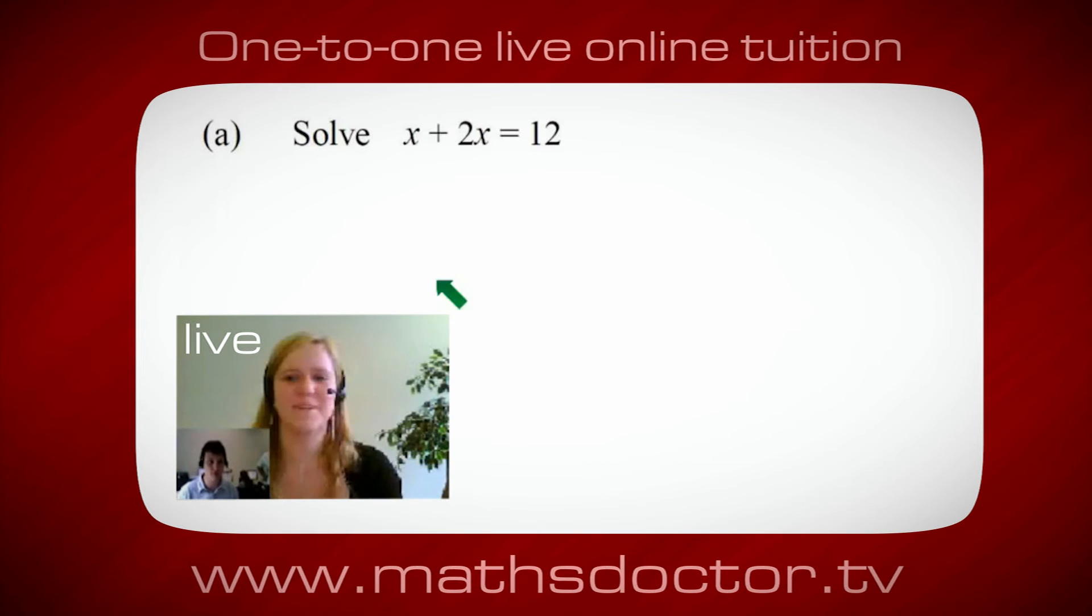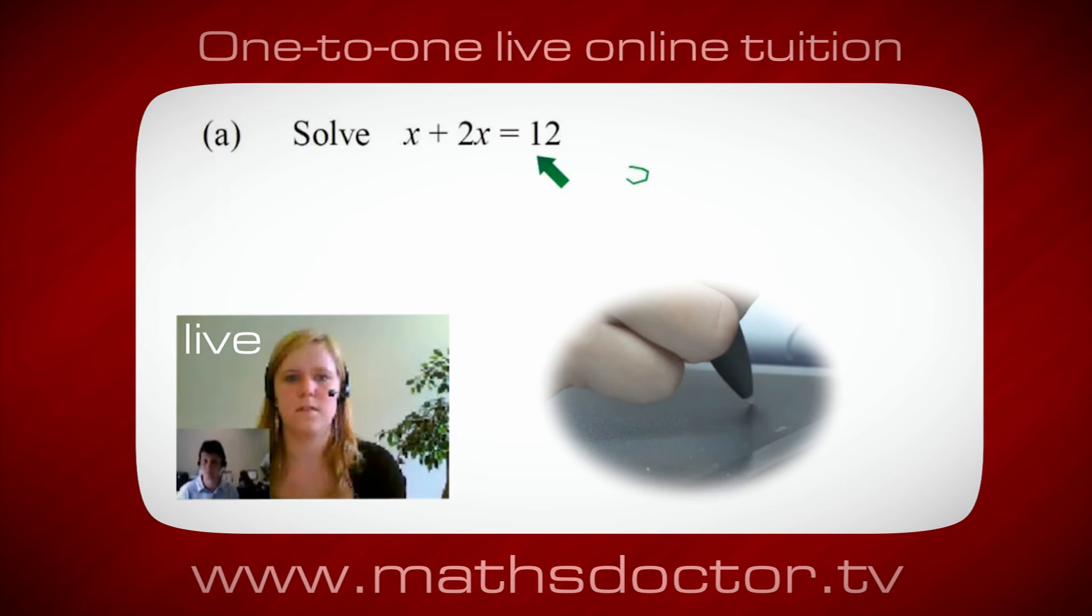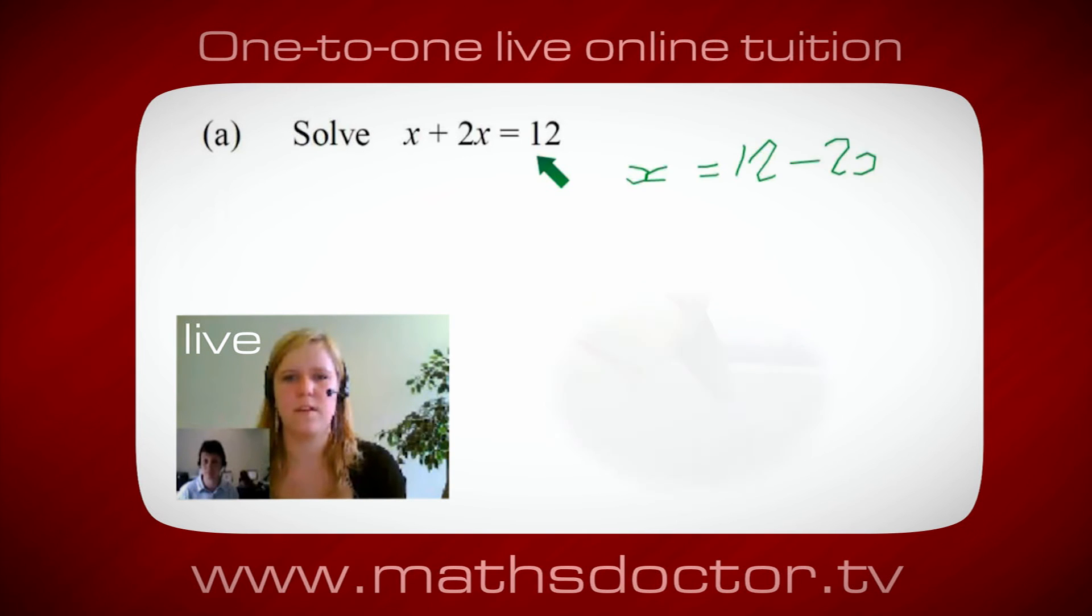OK, Marie, so let's have a look at this one. So solve x plus 2x equals 12. So what do you think you do first? Well, I want x on its own. So I would put x equals 12 minus 2x.